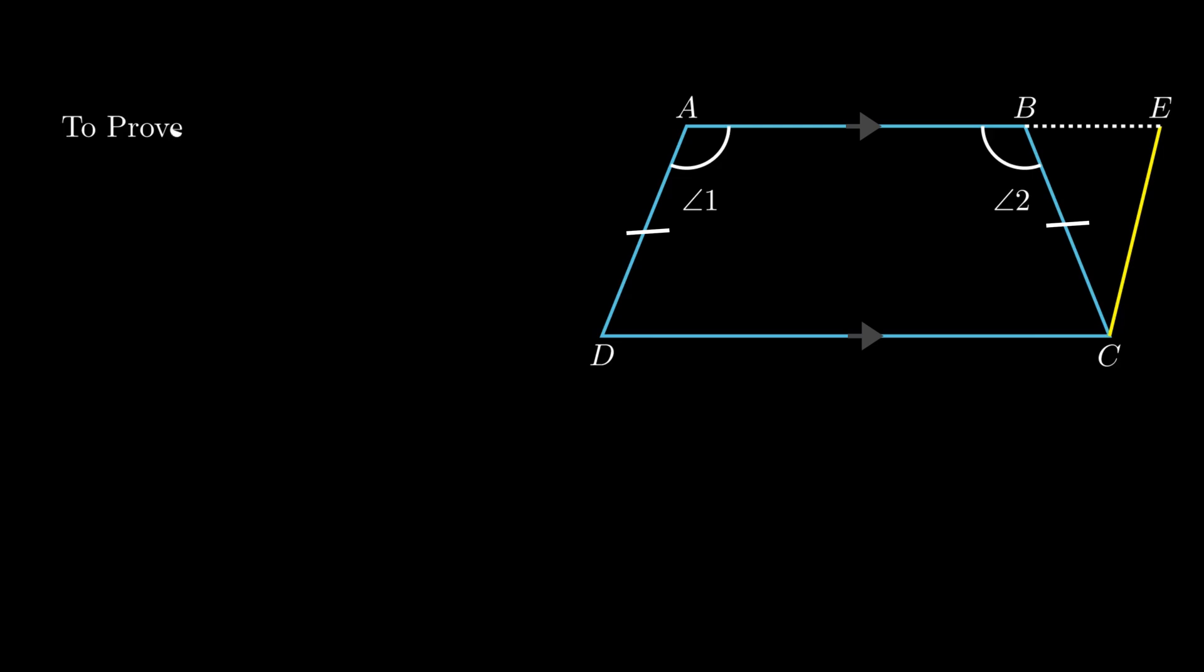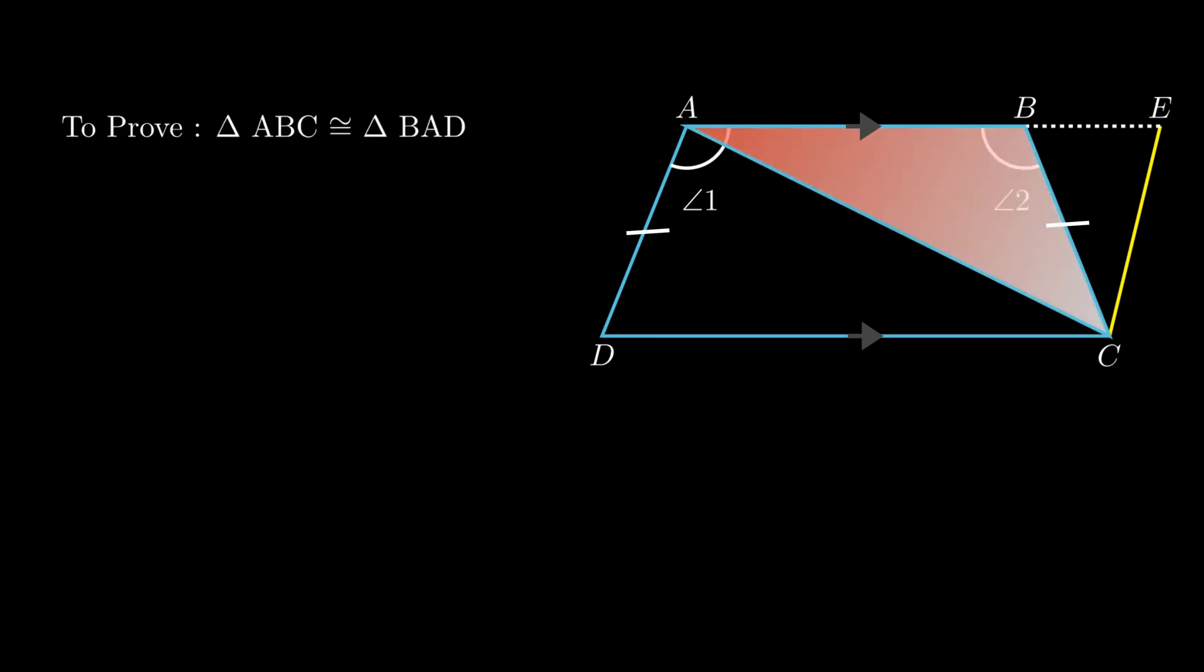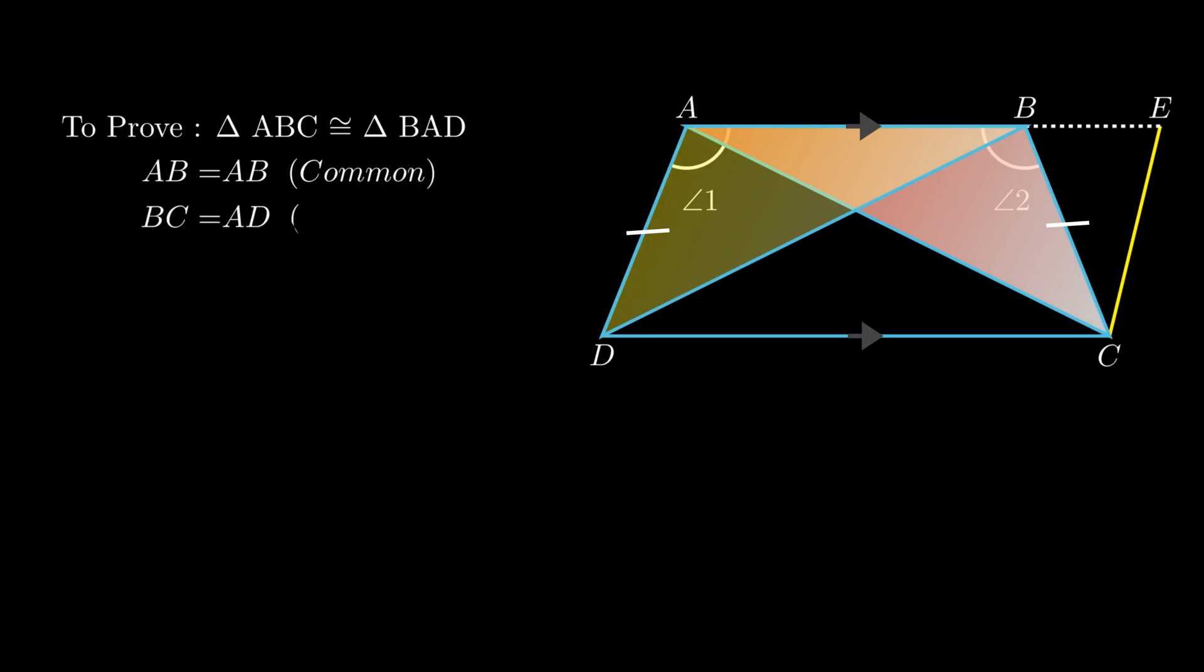For the third part, consider triangle ABC and triangle BAD. Side AB is common to both triangles. Also, side BC is equal to side AD, and angle B equals angle A as proved in the first part. Therefore, by side-angle-side rule, triangle ABC is congruent to triangle BAD.